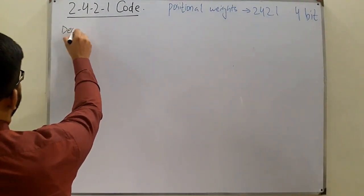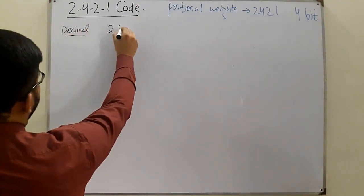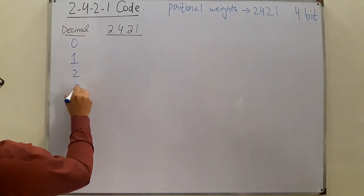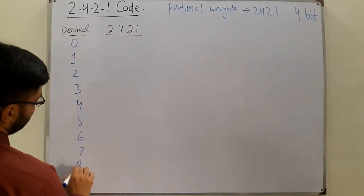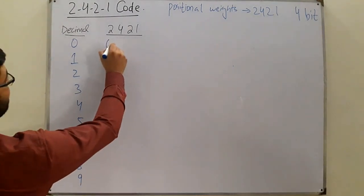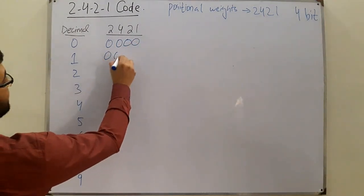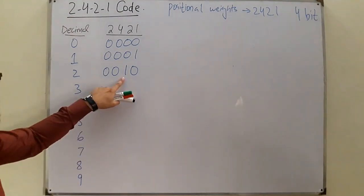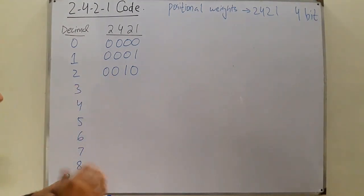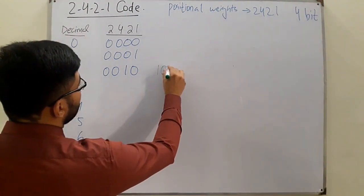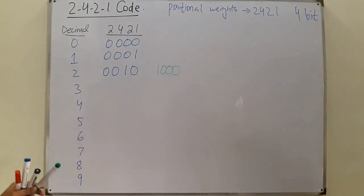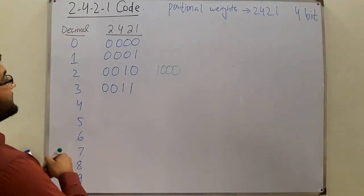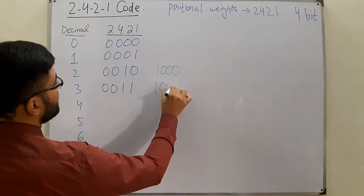So this is the decimal and this is the 2421 equivalent, from zero to nine. For zero, of course, all bits would be zero: 0000. For one, the least significant bit would be high: 0001. For two, the second positional weight bit is high: 0010. This two can also be represented as 0010 with the other two position high. For three, this could be 0011, and three can also be represented as 1001.